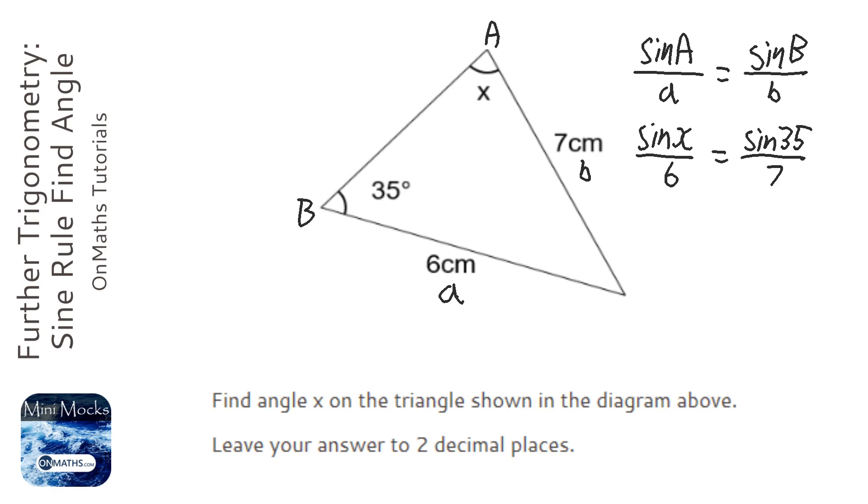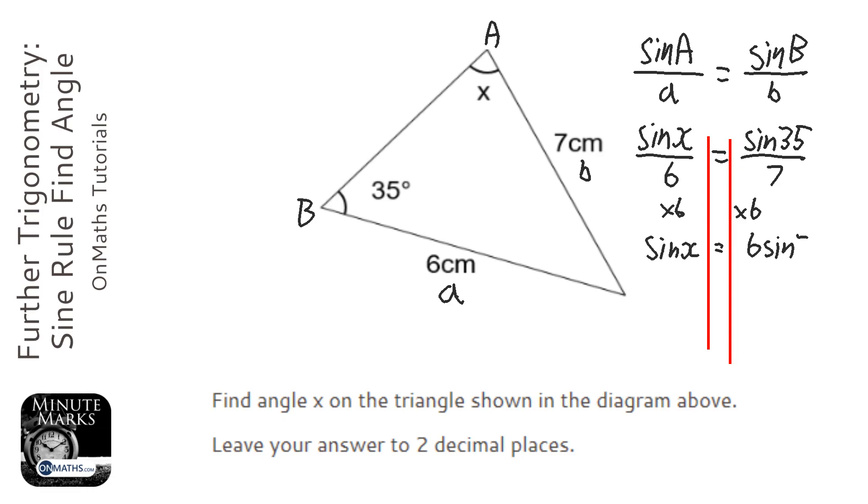Now we can put our lines in. Ok, so we go times 6 both sides. So we get sin x equals, and we end up with 6 sin 35 over 7.